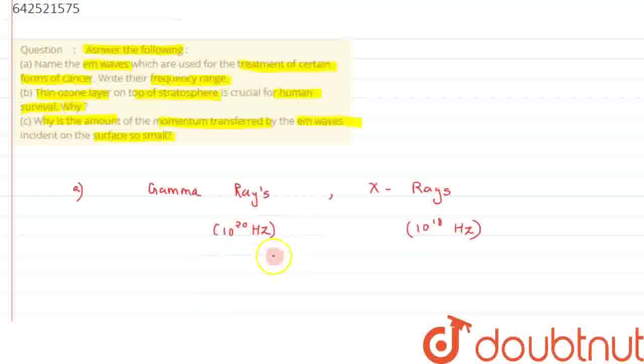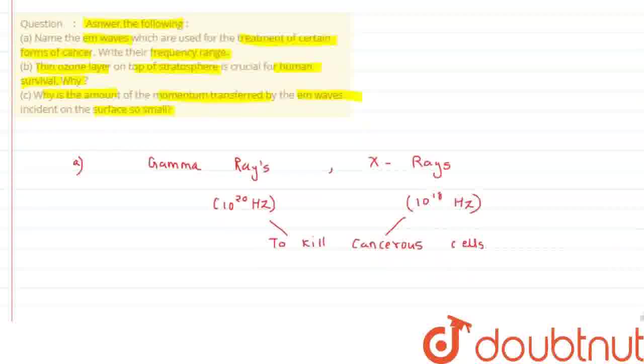So, due to the high frequency range, they are used to kill cancerous cells. So, we can say the purpose of both these rays can be to kill the growth of cancerous cells. And thus, it is used in the treatment of cancer. Alright, so this is the first part of the question. Now, let's move on to the second part.